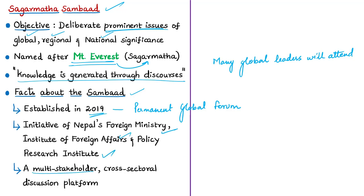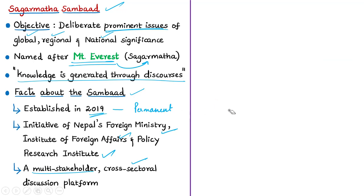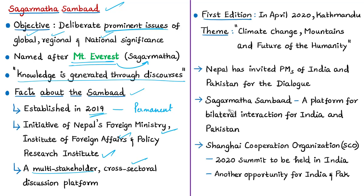The Sagar Mata Sambad is structured as a multi-stakeholder, cross-sectoral discussion forum. It aims to bring together global leaders including heads of state, heads of government, parliamentarians, policy makers, heads of local governments, leaders from intergovernmental organizations, private sector, civil society, think tanks, academia, women, youth, and media. The dialogue is expected to take place every two years. The first edition will be held in Kathmandu from 2nd to 4th April 2020. The theme of this year's dialogue is 'Climate Change, Mountains and the Future of Humanity.'